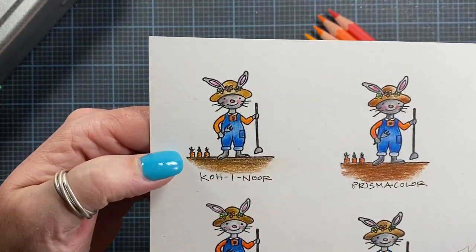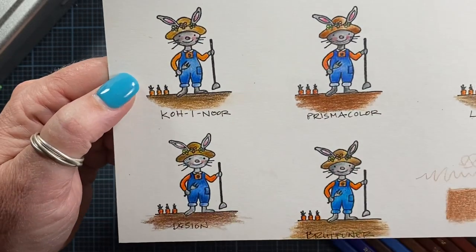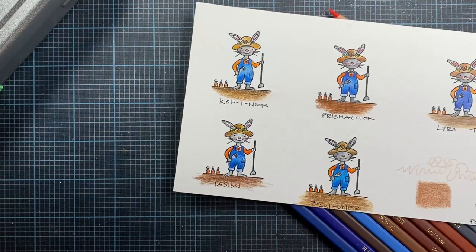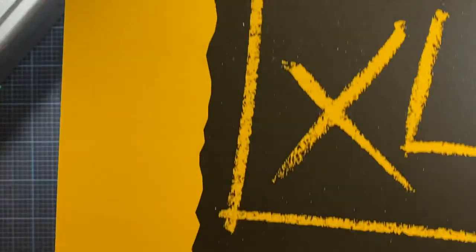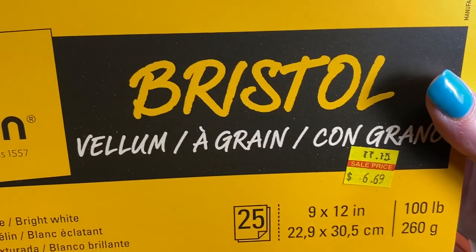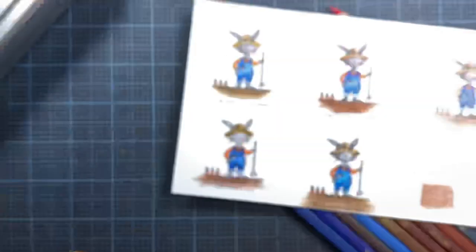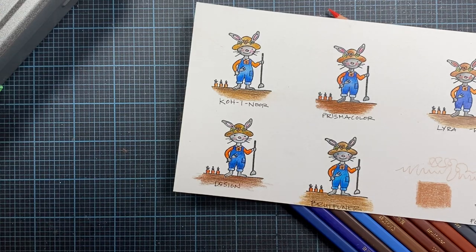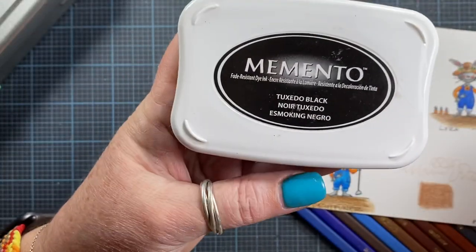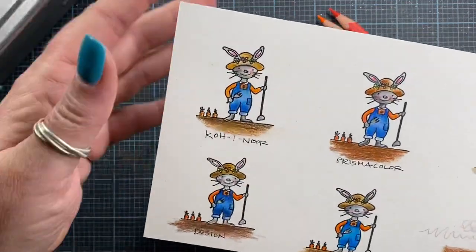So just to recap, I colored this bunny in various different colored pencil brands that I own. It is stamped on Canson Bristol vellum paper. It's a 100-pound cardstock from Canson. Vellum is in regards to the texture or tooth of the paper, so it works really well for colored pencils. I stamped this image here, it's from Amuse, and I stamped all of them in black Memento ink. So just so we have the basics covered.